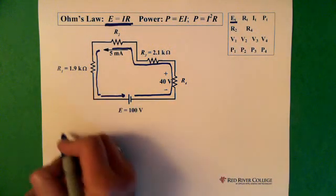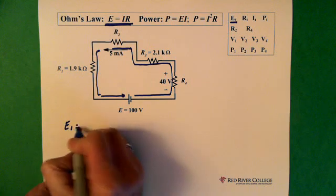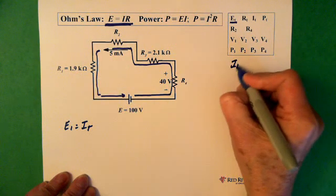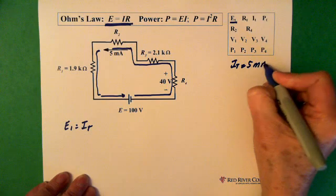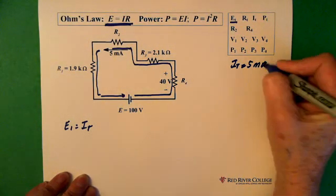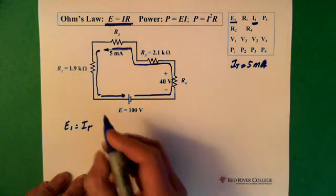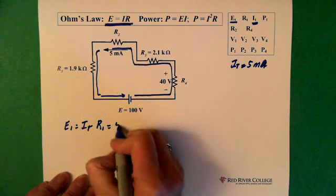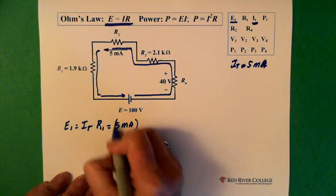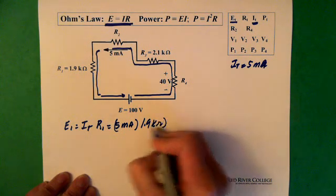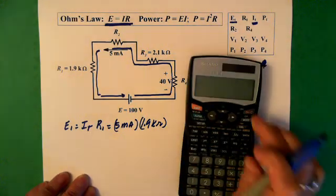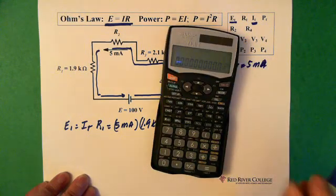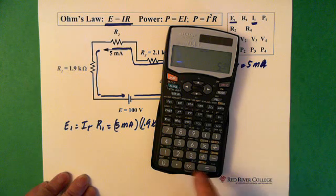So let's solve for the voltage across resistor 1, which again is total current, which is our 5 milliamps. So IT equals 5 milliamps. There's our IT. And IT times R1. So we have our 5 milliamps times 1.9 kilohms.